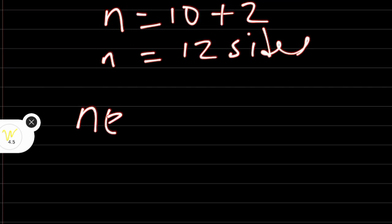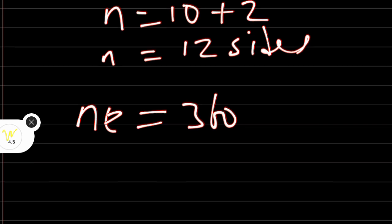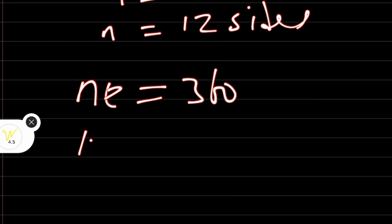There is a formula: nE equals 360. The product of the number of sides and the exterior angle is equal to 360. Our n is 12. Therefore, 12E equals 360.